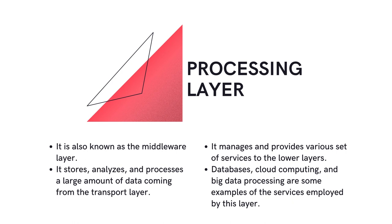The processing layer is also known as the middle-way layer for IoT architecture. This layer stores and analyzes the large amounts of data coming from the transport layer. After analyzing the data, it manages and provides various services to the lower layers. Examples of services used by this layer include databases, cloud computing, and big data processing modules.